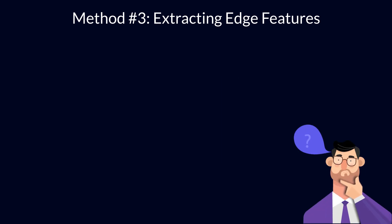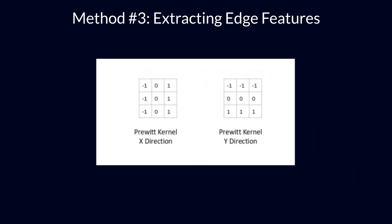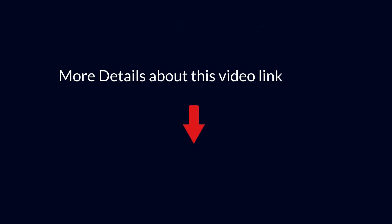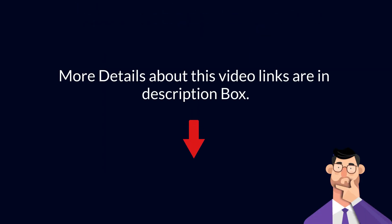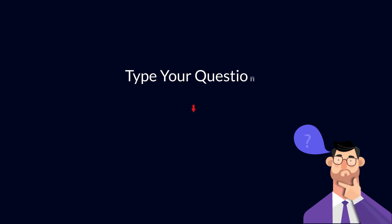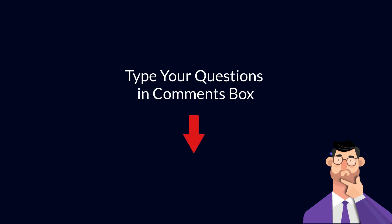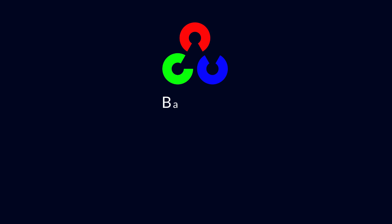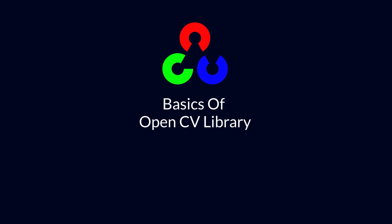Now the question is, do we have to do this step manually? No — there are various kernels that can be used to highlight the edges in an image. The method we just discussed can also be achieved using the Prewitt kernel. Check out the description box; I have attached a link for the Prewitt kernel. If you have any doubts, type your questions in the comment box. In the next video, we will see the basics of OpenCV, which is one of the popular libraries in computer vision. Thank you.